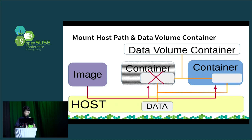When we design a container storage strategy for Docker and Kubernetes, the most important thing is to determine which data needs to be outside of the container — in other words, which data needs to be persistent. It is necessary to know the container structure to understand which data does not change from the image, and which data changes from the image in operation.